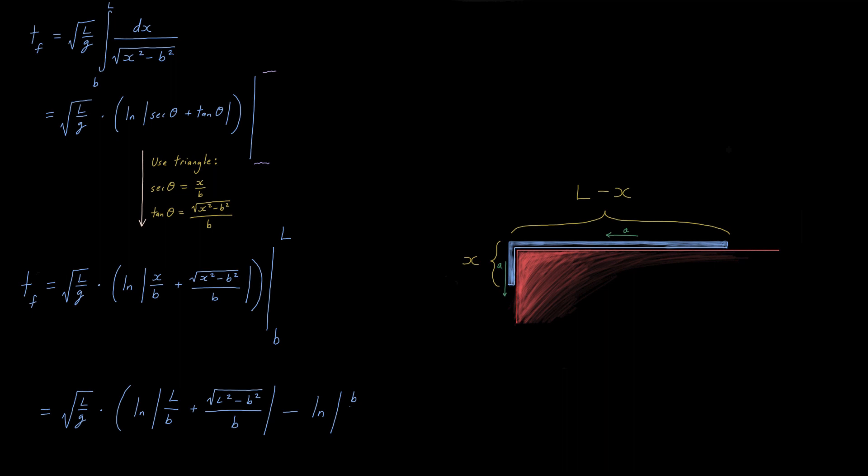And our bounds of integration are now x values. x initial is b, x of t_f is L. Being careful with computation now leaves that guy there as our final answer for the time it takes for the chain to just slip off the table.